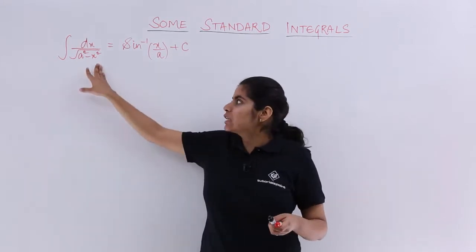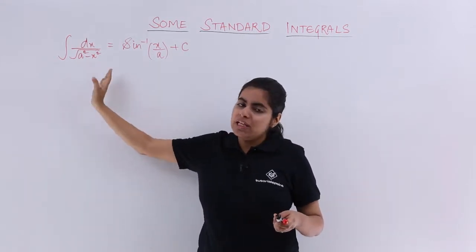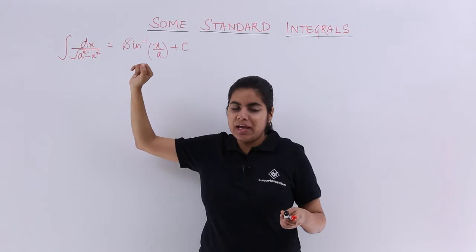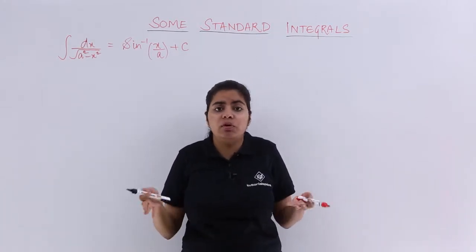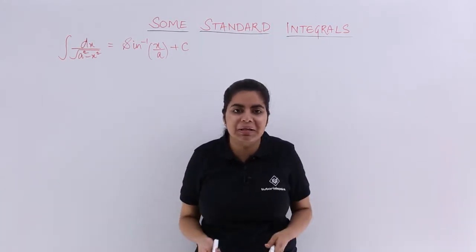No, because a square secant square theta will come. A square definitely will go outside in form of a. One minus secant square theta - no formula for it. It is secant square theta minus one.